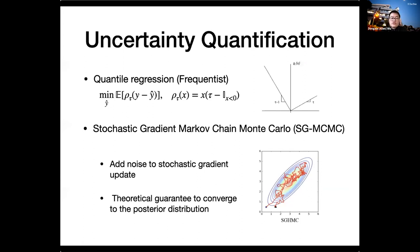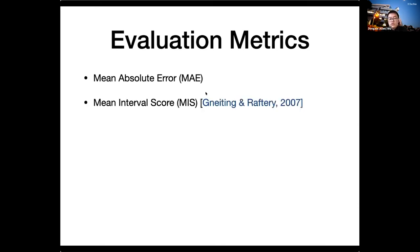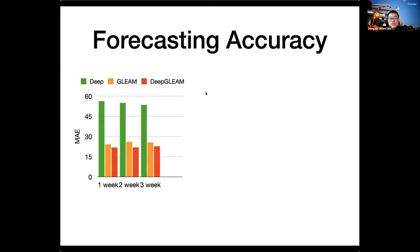One frequentist method is Quantile Regression: we set several confidence interval taus and use a pinball loss to train the model to make predictions at the corresponding confidence level. A Bayesian method is Stochastic Gradient Markov Chain Monte Carlo (SG-MCMC): we add noise to stochastic gradient descent so it can sample the posterior distribution efficiently, with a theoretical guarantee that the chain will converge to the posterior. We run multiple chains to generate samples and quantify prediction uncertainty. This gives us our final Deep GLEAM model. To evaluate performance, we use mean absolute error for accuracy and mean interval score for uncertainty quantification — for both metrics, lower is better.